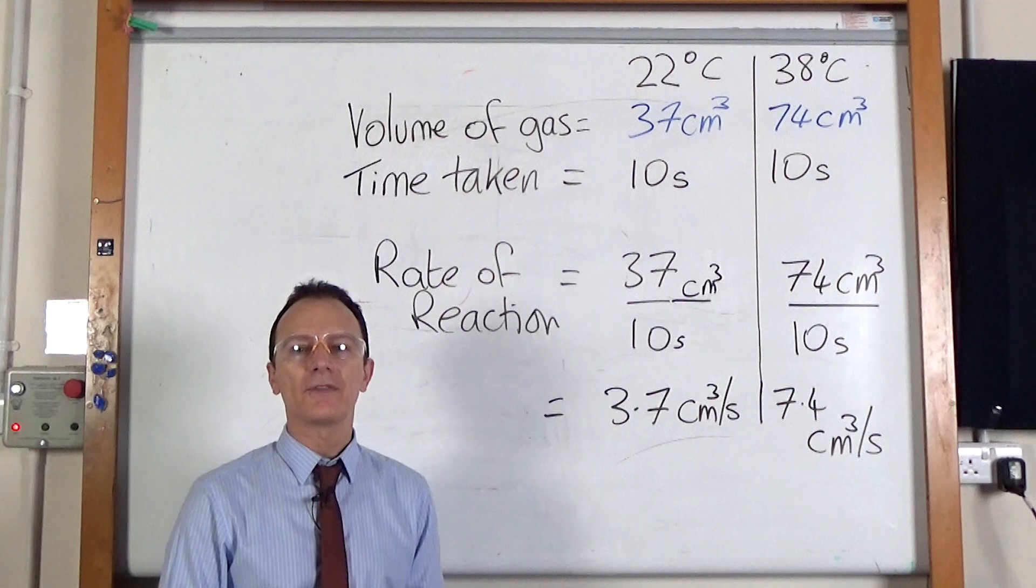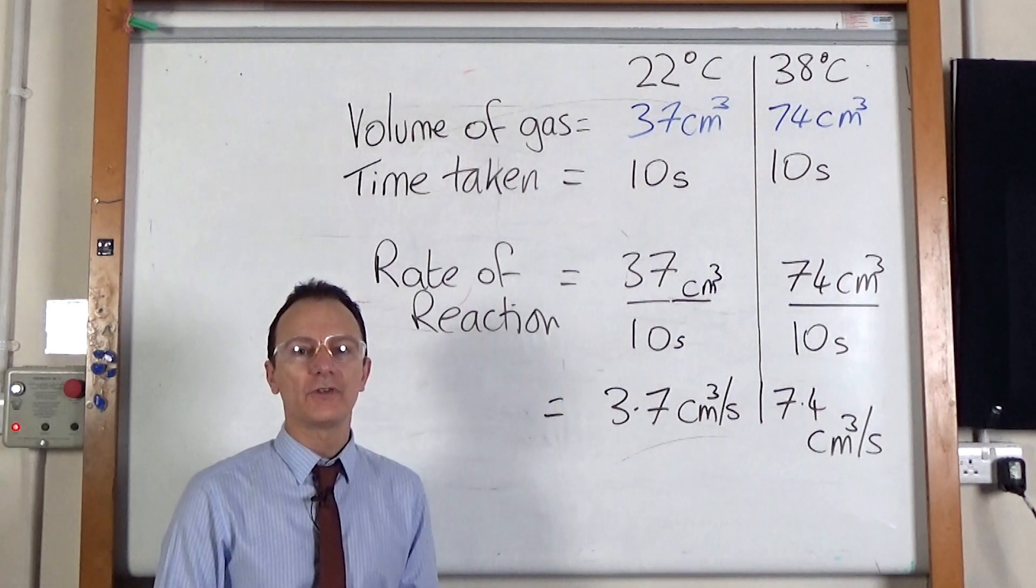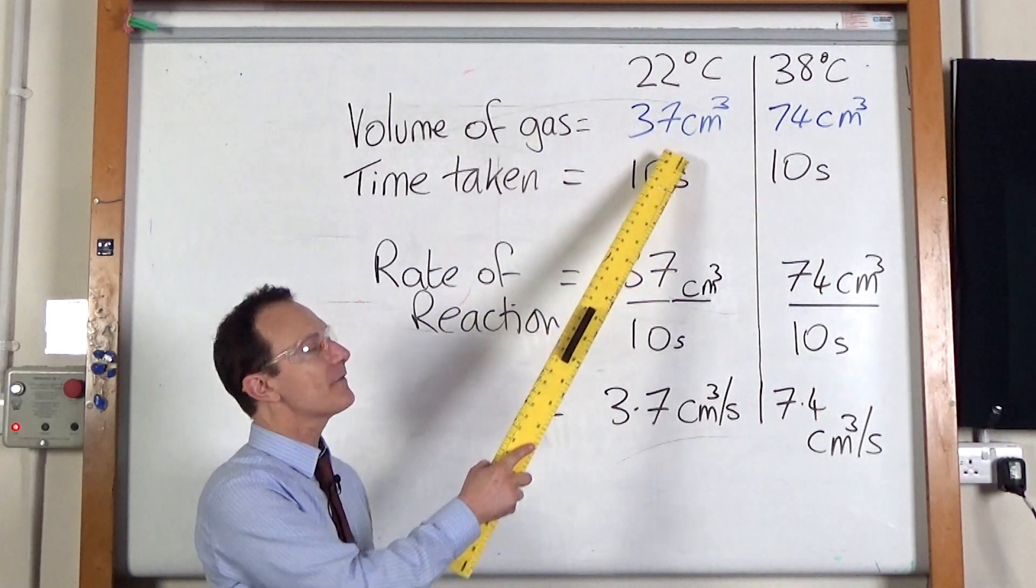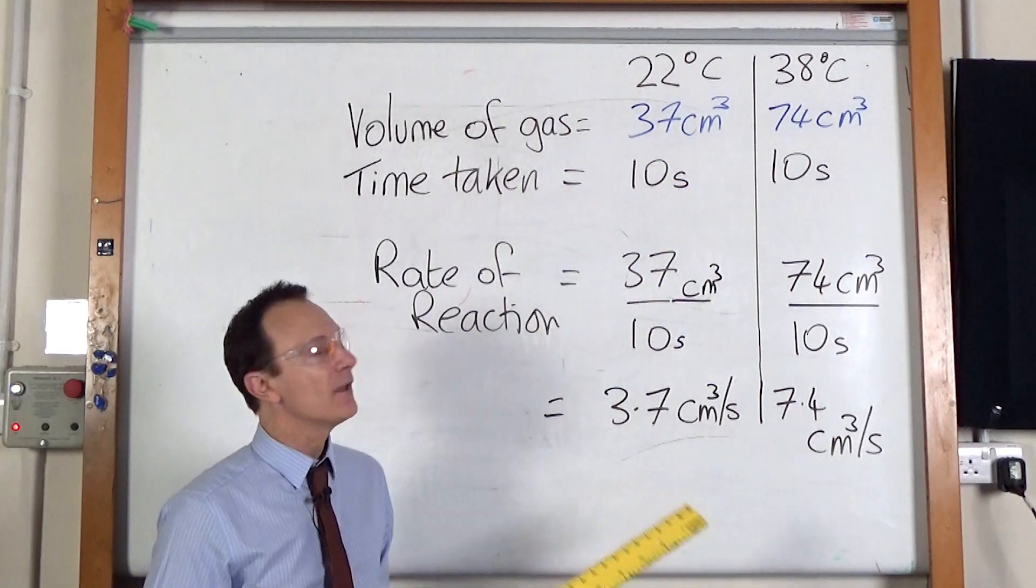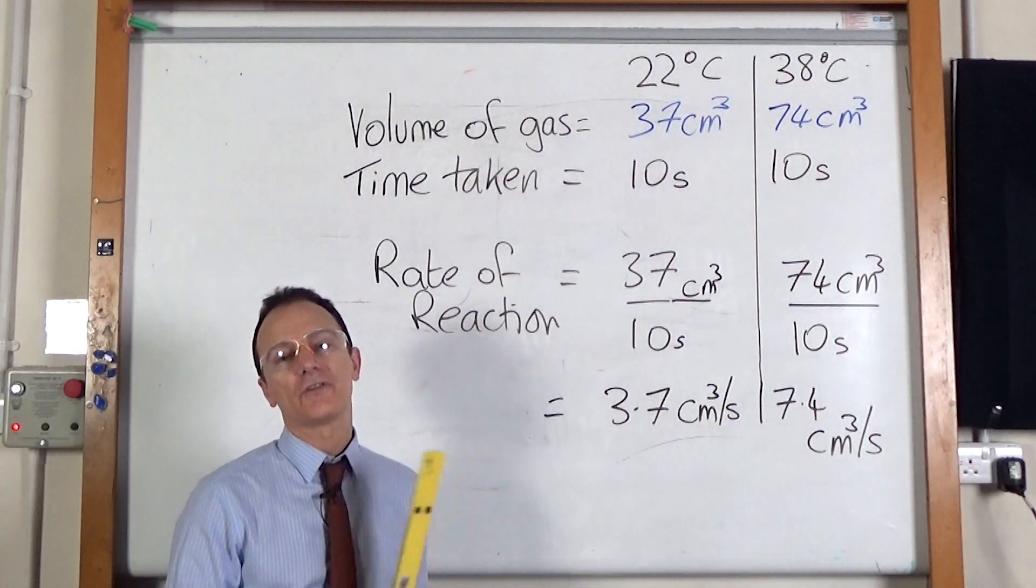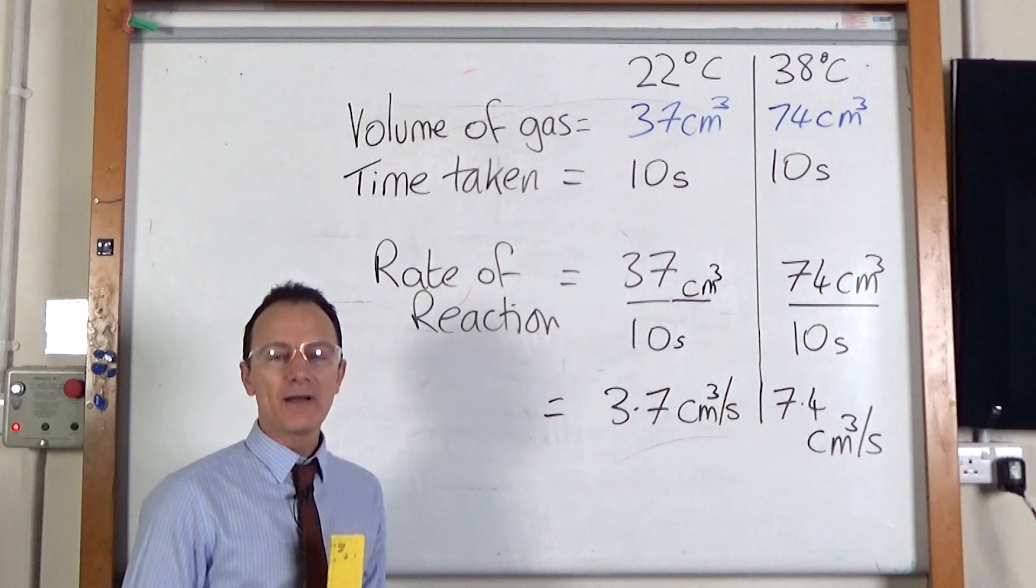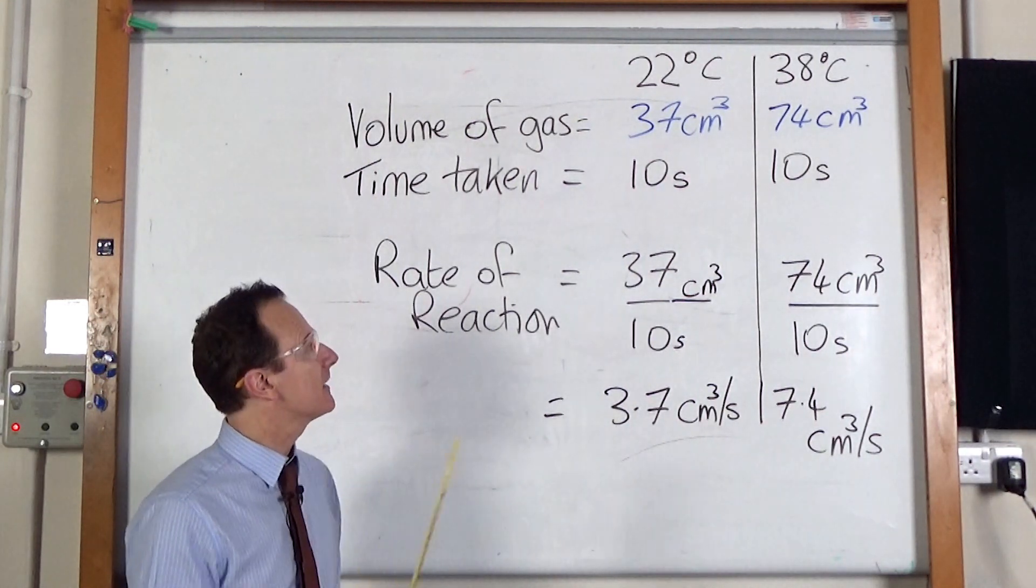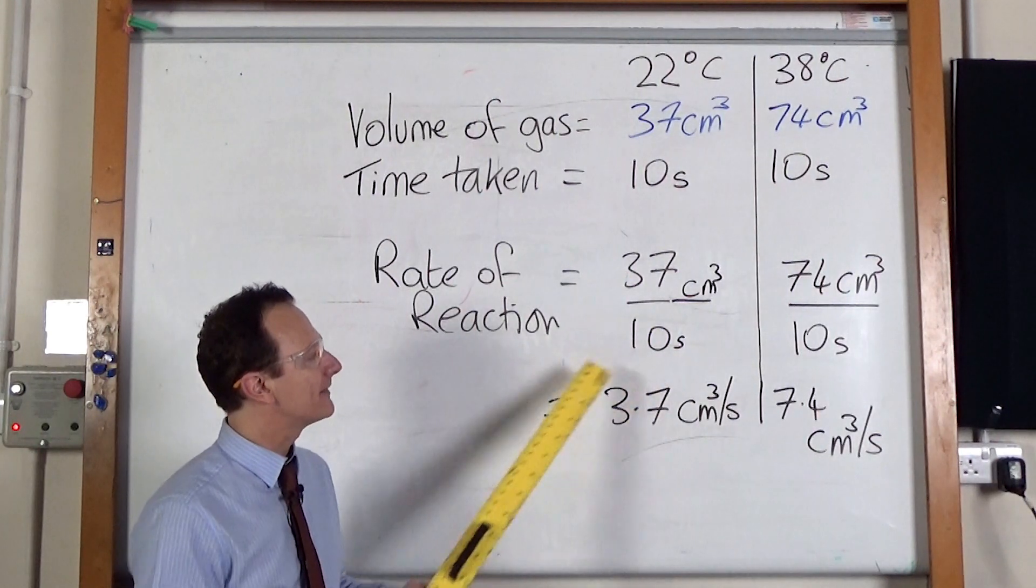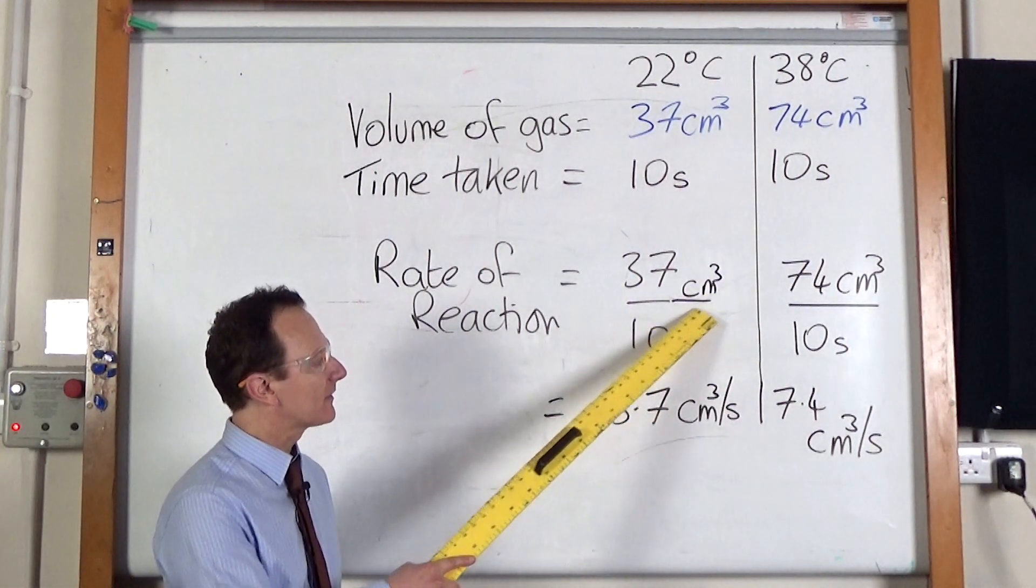If we want to work out the actual rate of reaction at these two different temperatures, then we need to know the amount of product produced and the time taken. So at the lower temperature of 22 degrees, it produced 37 centimeters cubed of gas in 10 seconds, whereas at the higher temperature, 38 degrees, it produced 74 centimeters cubed of gas in 10 seconds. And the formula for working out the rate of reaction is the amount of product produced divided by the time taken. So at the lower temperature, that is 37 centimeters cubed divided by 10 seconds, so that is 3.7, and the unit is going to be centimeters cubed slash seconds.